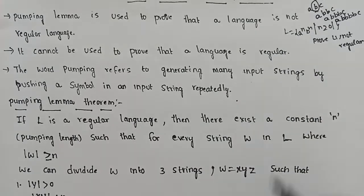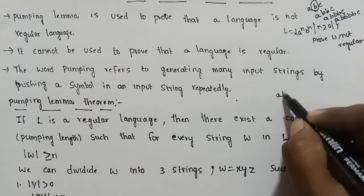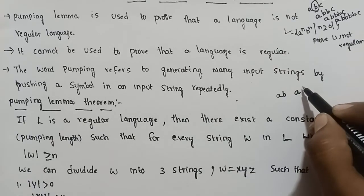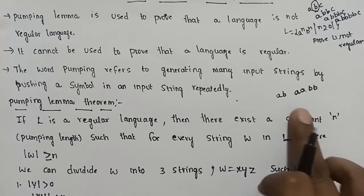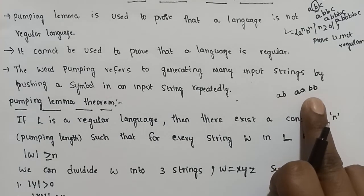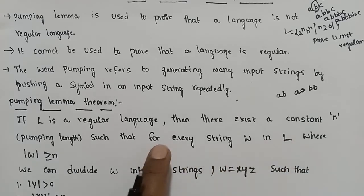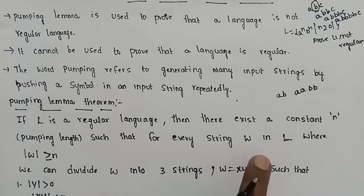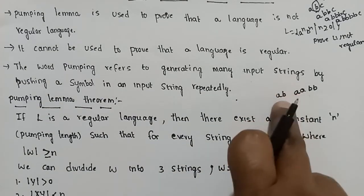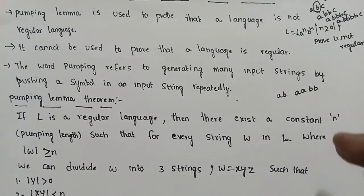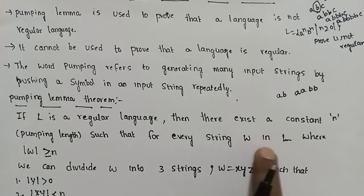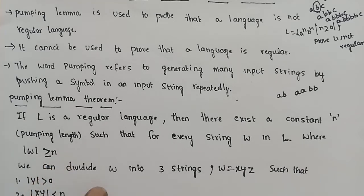For example, consider the language A-N and B-N. This language is a set of strings. For every string W in this language, such that the length of that string should be greater than or equal to N.